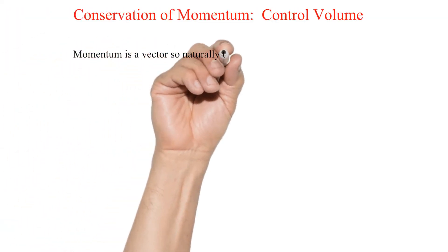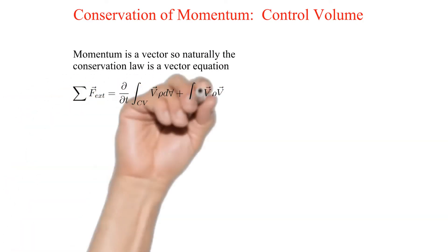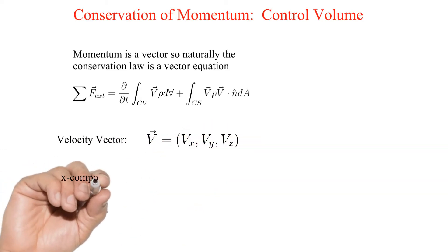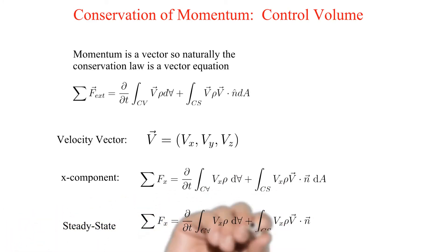Momentum is a vector so naturally the conservation law is a vector equation. If we denote the velocity vector as shown, then the x component of the integral conservation of momentum is as shown. The y and z components are similar but for brevity will not be shown here. Steady state will make the time derivative term zero as shown.